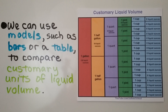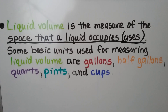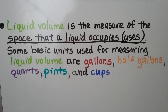Liquid volume is the measure of the space that a liquid occupies — 'occupies' means uses. Some basic units used for measuring liquid volume are gallons, half gallons, quarts, pints, and cups.